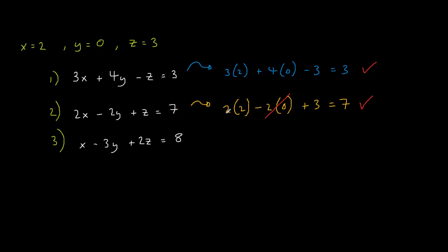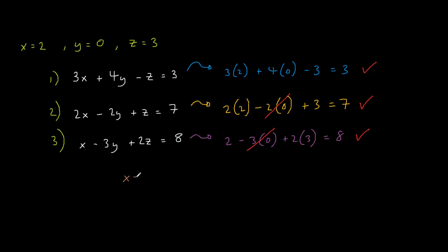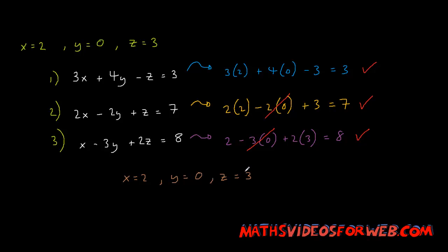Finally, let's check equation 3: 2 minus 3 times 0 plus 2 times 3 equals 8 — that's 2 minus 0 plus 6 equals 8, so these values do fit into equation 3 and make sense. So there we have it: x is 2, y is 0, and z is 3. We've solved simultaneous equations containing three unknowns.